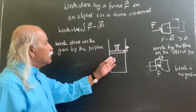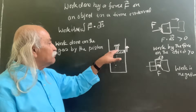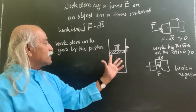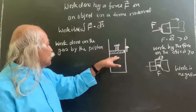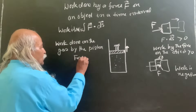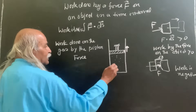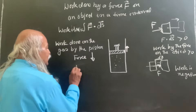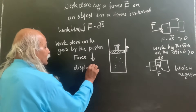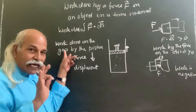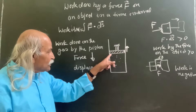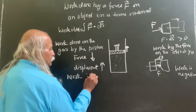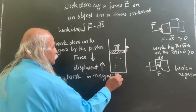Now, the gas is exerting force on the piston in the upward direction, so by Newton's third law the piston exerts force on the gas in the downward direction. So the direction of force by the piston on the gas is downward. And what is the displacement? This force is exerted on the gas, so we look at the gas displacement. This gas layer is being displaced upward. So the work done on the gas by the piston is negative.